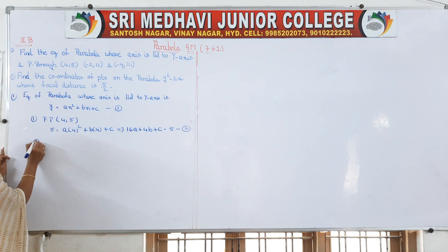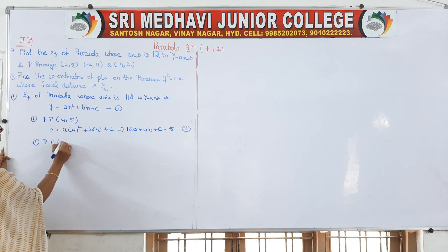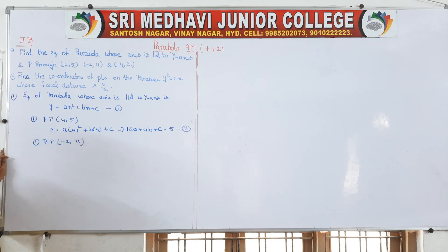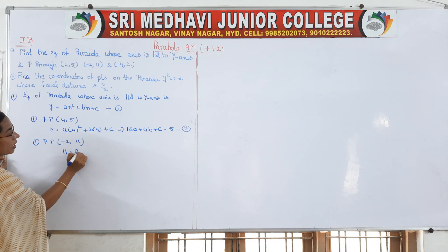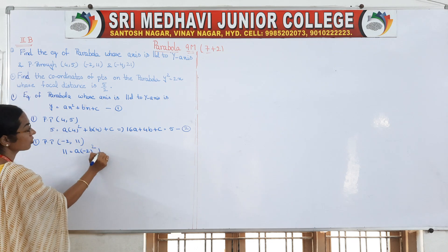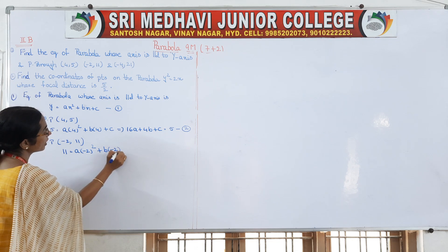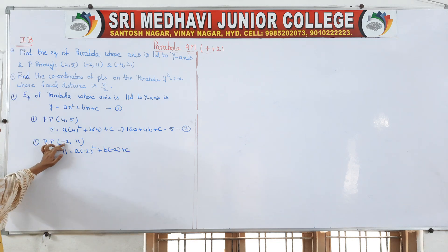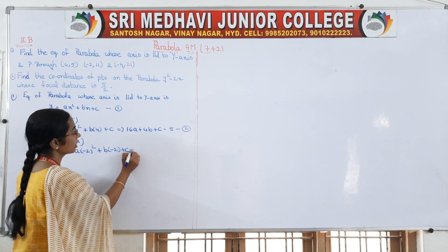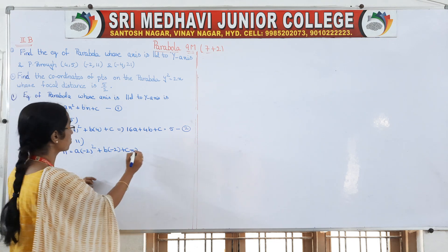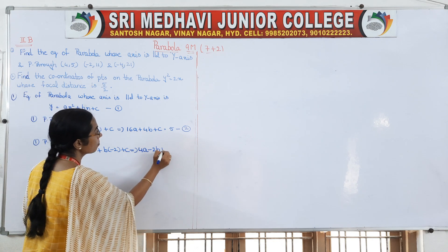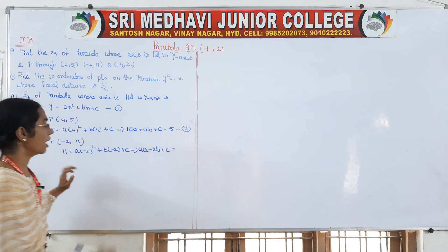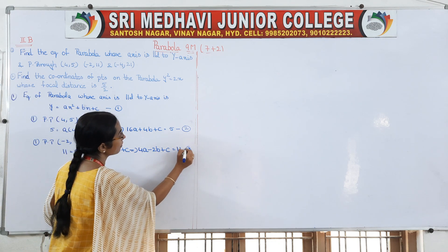Next, the parabola passes through the point (-2, 11). Wherever x appears, substitute -2; wherever y appears, substitute 11. So 11 = a(-2)² + b(-2) + c, which gives 4a - 2b + c = 11. Consider this as your third equation.